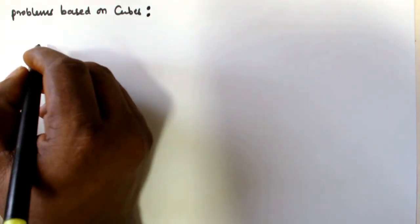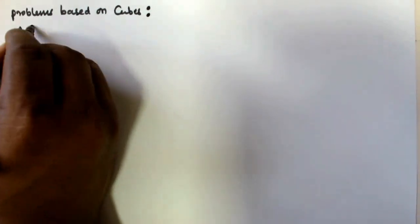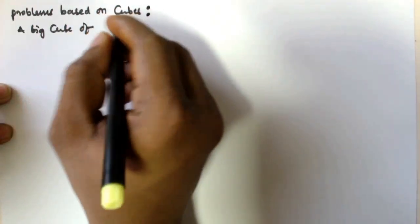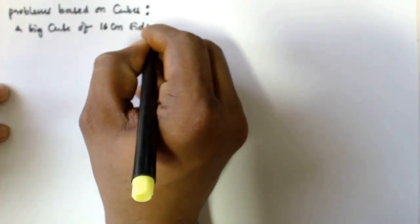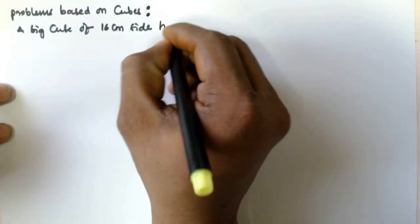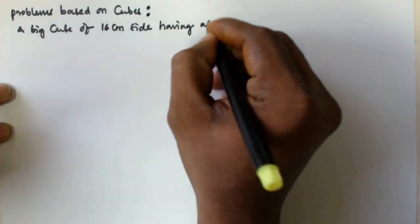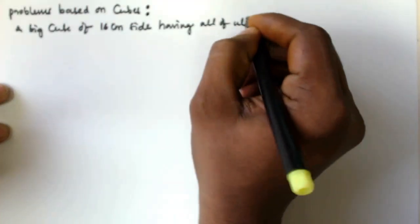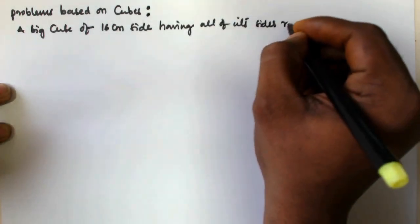Hello friends. In this video we will see another problem based on cubes. The problem is: a big cube of 16 centimeter side having all of its sides red colored.